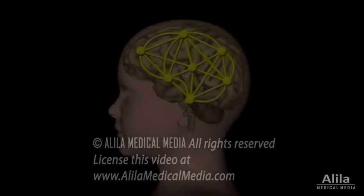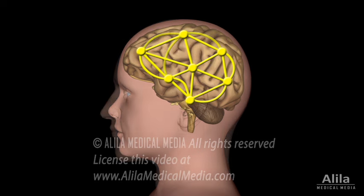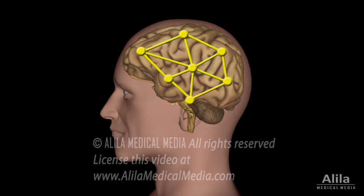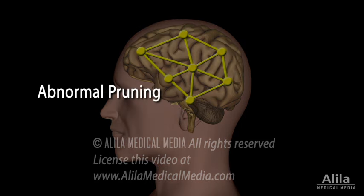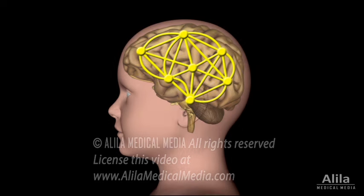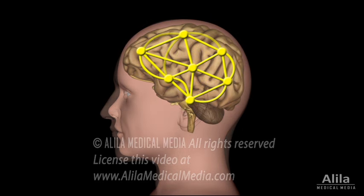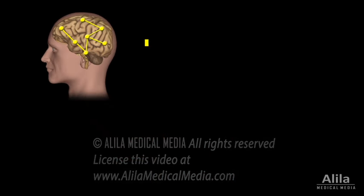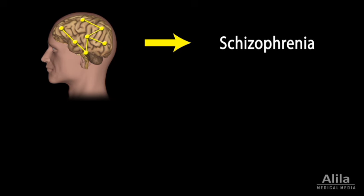Given the important role of synaptic pruning in sculpturing and refining the brain's neural circuits, it is plausible that aberrant synaptic pruning is associated with a number of neurological disorders, such as schizophrenia, autism, and epilepsy. Too much pruning results in shortage of connections and is thought to underlie schizophrenia. The first occurrence of schizophrenia symptoms, typically in late adolescence or early adulthood, coincides with the time when synaptic pruning is most prominent.